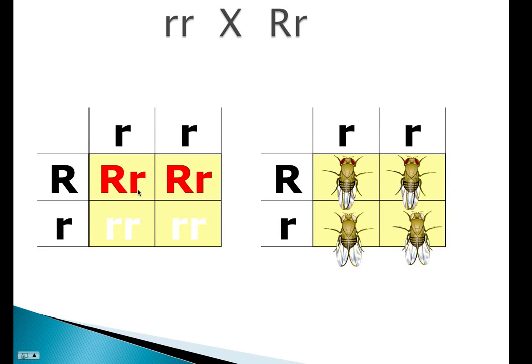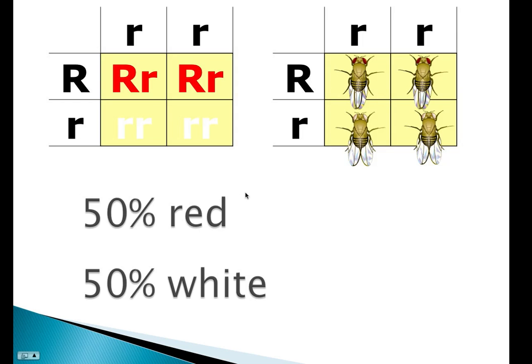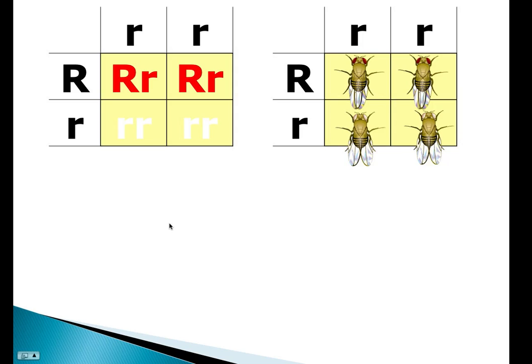So if we actually look at the results here, we can actually see that 50% are going to be red and heterozygous, and 50% are going to be white-eyed and homozygous. You can see two reds to two whites. And oftentimes you'll be asked a question like, what would you expect in terms of percentages among the offspring? And what you would expect would be 50% red or 50% white.